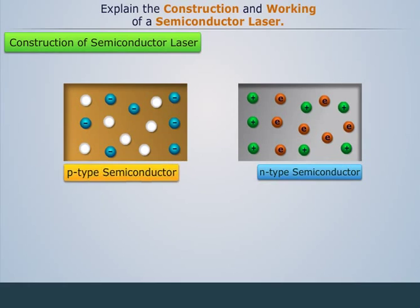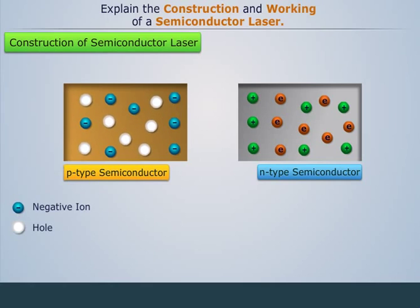P-type semiconductor consists of negative ions and holes, whereas N-type semiconductor consists of positive ions and electrons.